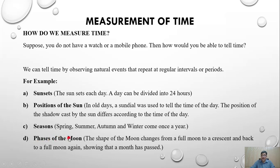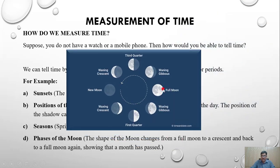Phases of the moon: the shape of the moon changes. Almost everyone has seen that the shape of the moon changes from a full moon to a crescent and back to a full moon again. This cycle includes full moon, waning gibbous, third quarter, waning crescent, new moon, waxing crescent, first quarter, waxing gibbous, and then full moon again. When this cycle completes, it means one month has passed.